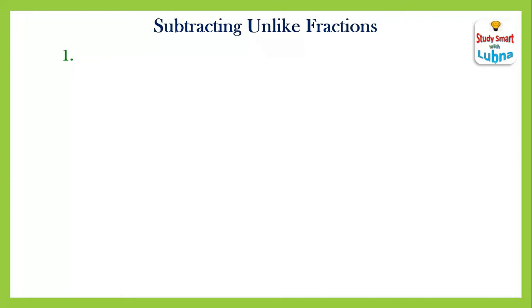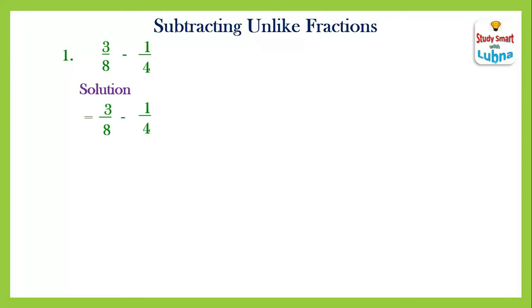Number one: three upon eight minus one upon four. Here you can see that these two fractions are unlike fractions because their denominators are different. So how will we subtract these two unlike fractions? Let's start solving it. After putting the heading 'Solution' and the equals sign, we copy both fractions as they are with the subtraction sign: three upon eight minus one upon four.